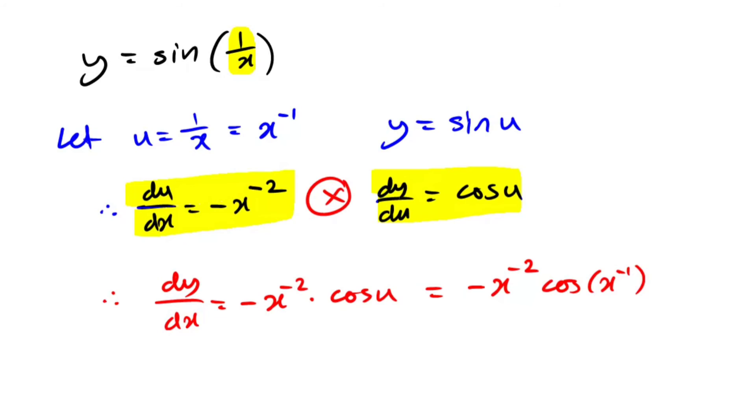And if you want to be extra fancy, keeping it in a way that it was originally written, so instead of the negative powers, the x to the minus 2 is basically 1 over x squared. So it's going to look something like this. So you're going to have cos 1 over x over x squared. And then you put the minus sign here.